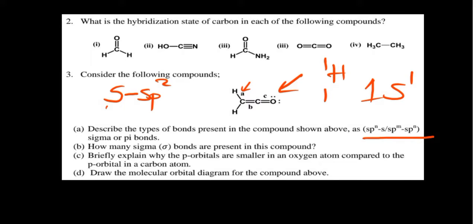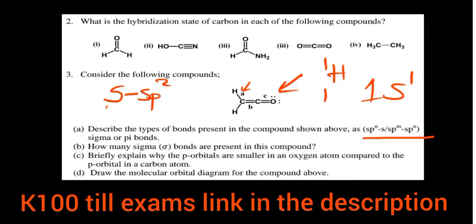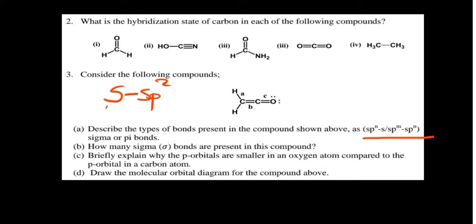For bond 'b', we are looking at the overlap between this carbon and the other carbon. The first carbon is sp2 hybridized. The other carbon has two connections — counting one as s and the other as p — so it is sp hybridized. Therefore, bond 'b' occurs between the sp2 hybridized orbital of the first carbon and the sp hybridized orbital of the second carbon.